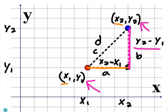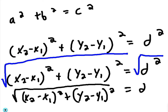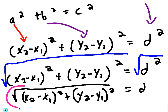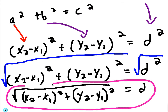We know the horizontal distance is X2 minus X1 and the vertical distance is Y2 minus Y1. We substitute those into the Pythagorean Theorem: if the horizontal distance is X2 minus X1, plug that in for A; if the vertical distance is Y2 minus Y1, plug that in for B. Take the square root of both sides to get D by itself — that's your distance formula, and it comes from the Pythagorean Theorem.